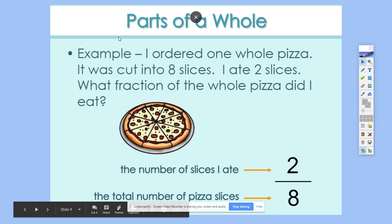If we want to look at parts of a whole instead of parts of a set, here's another one of those pizza examples. I ordered one whole pizza, and it was cut into eight slices. I ate two of them. What fraction of the whole pizza did I eat? Well, if I eat these two out of eight, I ate two out of eight pieces, or two-eighths of the pizza. If I only ate one piece out of the eight, then one-eighth of the pizza.